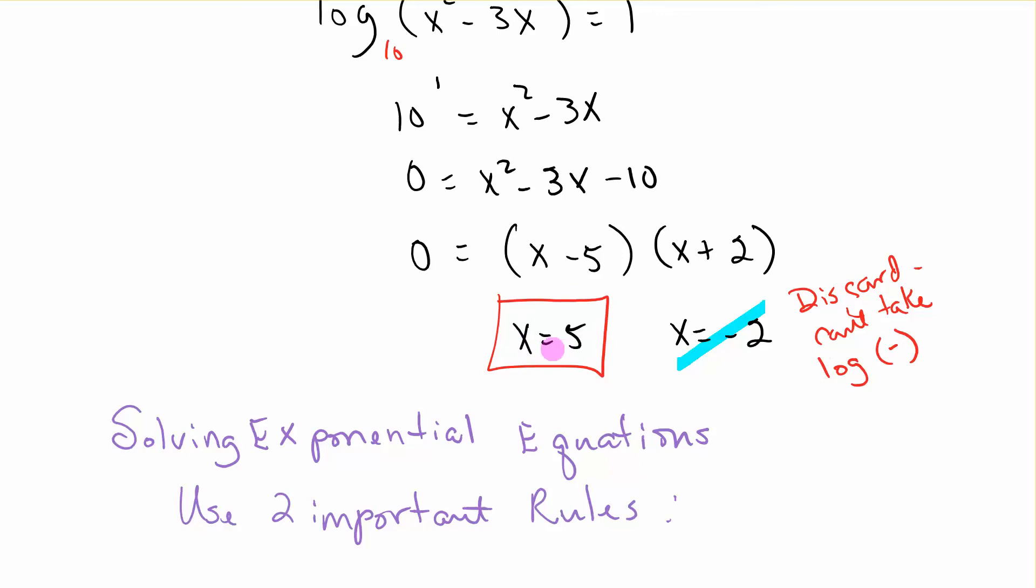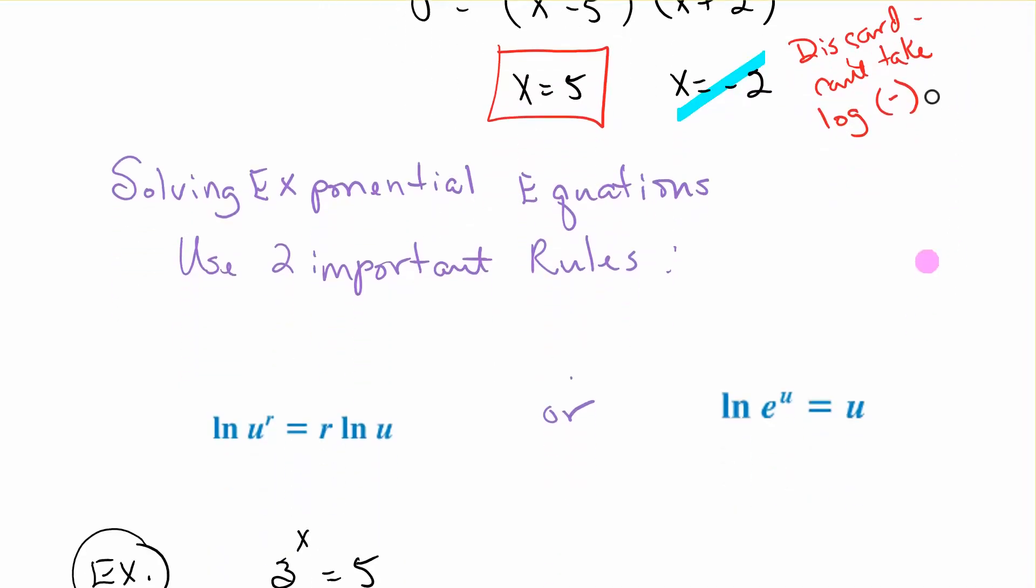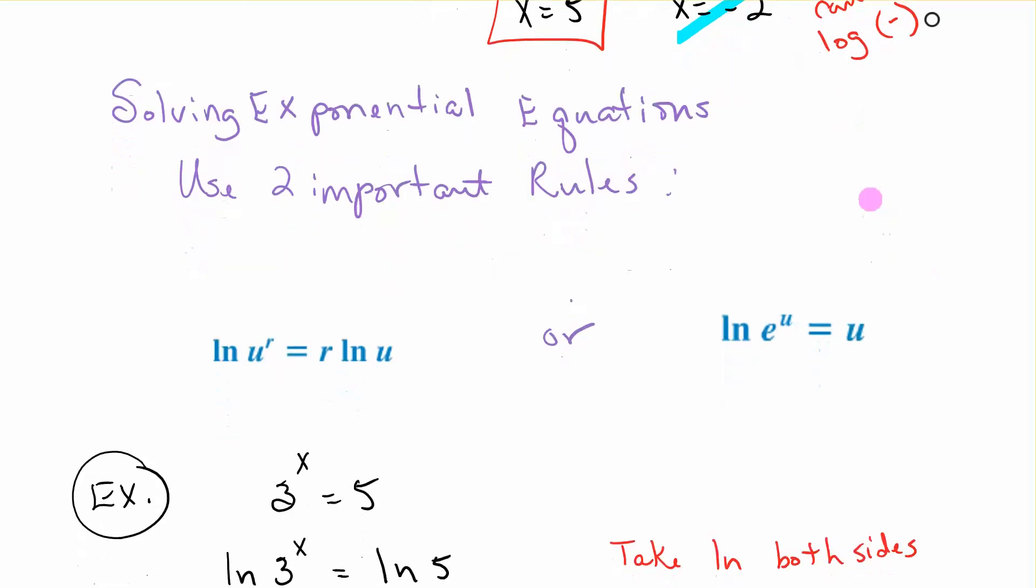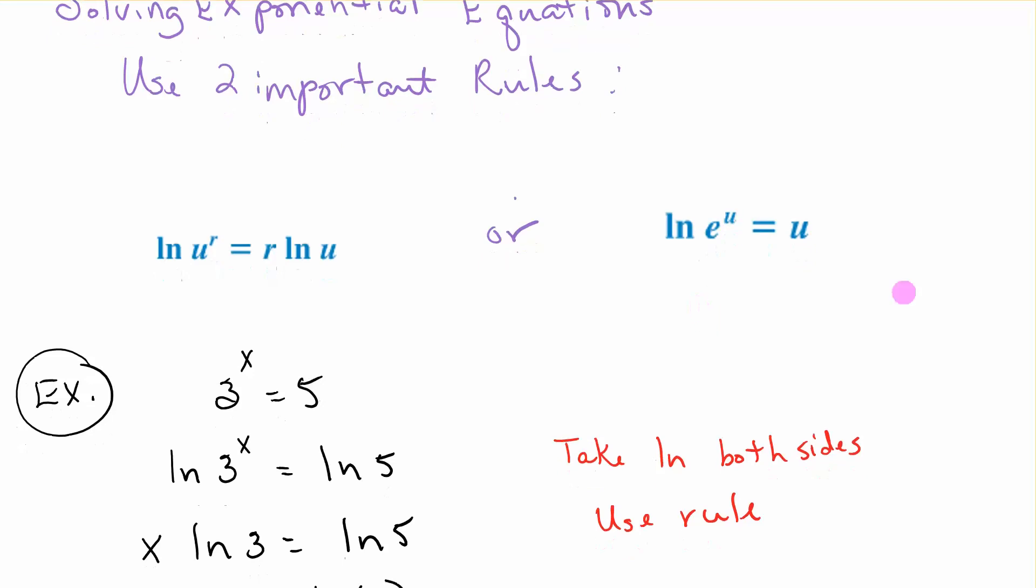That's solving log equations. For exponential equations, we did some in the previous chapter where we made sure the bases were the same and we only had problems in which that worked. But we're going to encounter some where we can't make them be the same bases. So we're going to use two rules. Ln of u to the r is equal to r Ln u. That's that power rule. And Ln is a log, a natural log. Or Ln of e to the u is equal to u. The Ln and e cancel each other out.